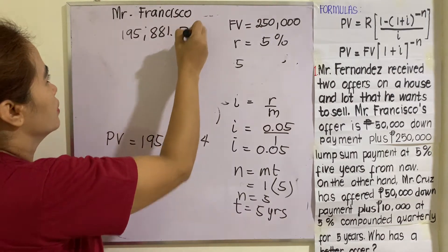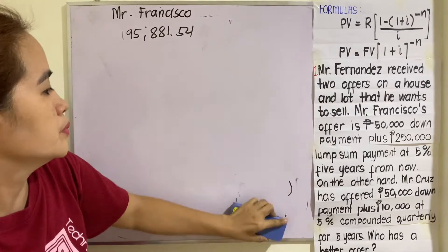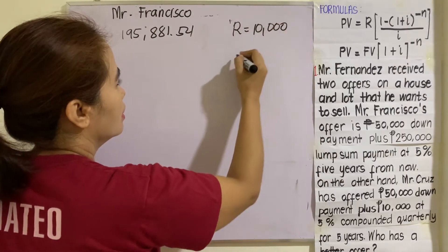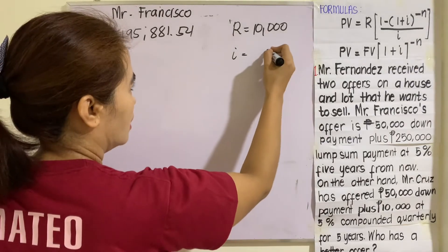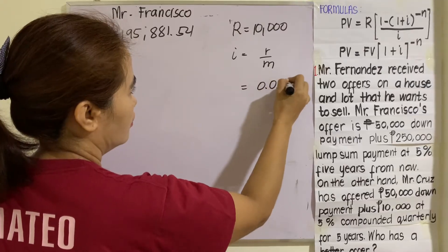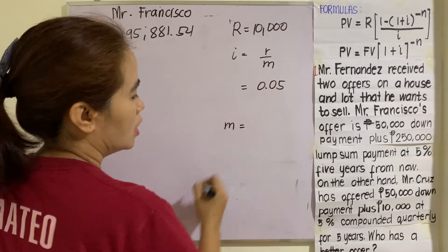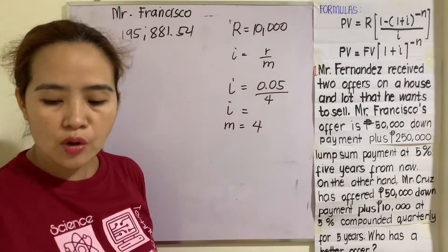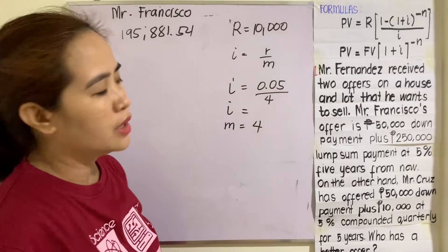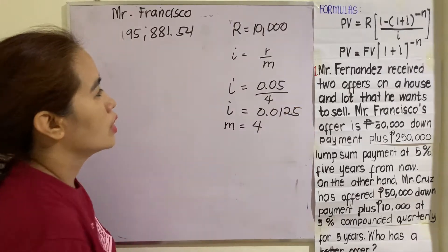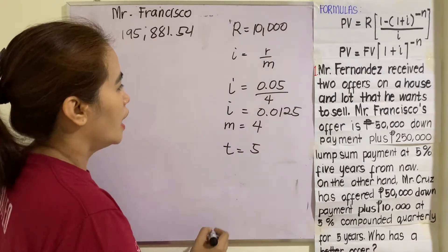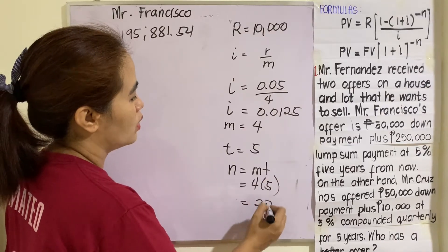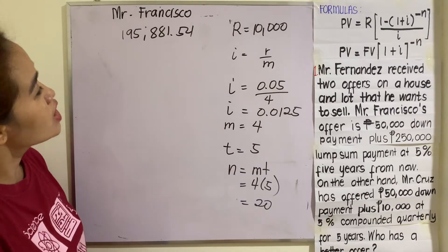Now for Mr. Cruz's offer, let's identify the given: R equals 10,000 as the periodic payment. The interest rate r is 0.05. Since payments are quarterly, m equals 4. So i equals 0.05 divided by 4, giving i equals 0.0125. Our t is still five years, and n equals m times t, which is 4 times 5, giving n equals 20.